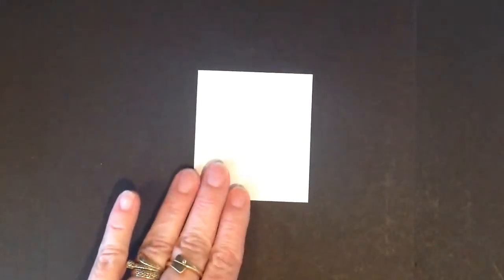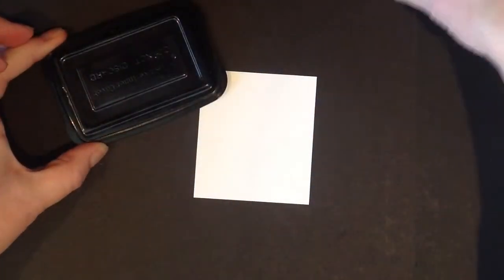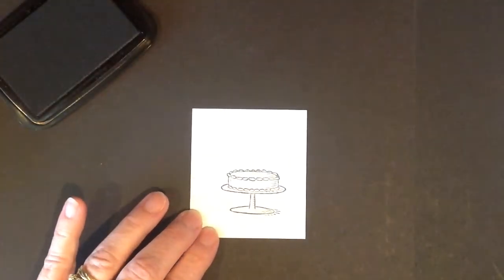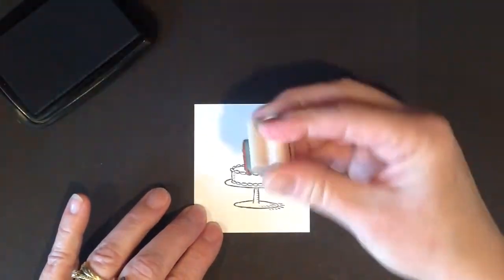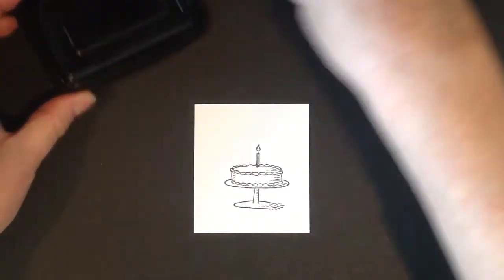When we're using an aqua painter, we want to be sure and use the StazOn ink. This is a solvent-based ink, a permanent black. It comes with this little lid. You don't want to throw that away when you get it. You want to be sure you keep that because that's what keeps your ink pad nice and juicy from drying out. So we're going to stamp that with our StazOn black.